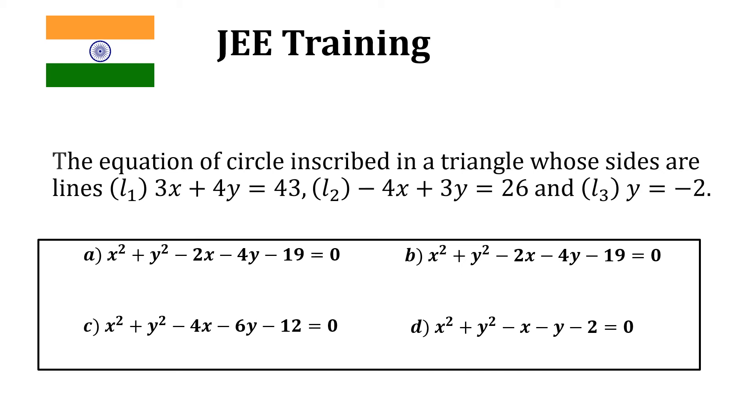Hey guys, this is Ulrich from Nostalgic Mathematics. Today we will try to find the equation of circle inscribed in a triangle whose sides are lines L1, 3x plus 4y equals 43, L2, negative 4x plus 3y equals 26, and L3, y equals minus 2.